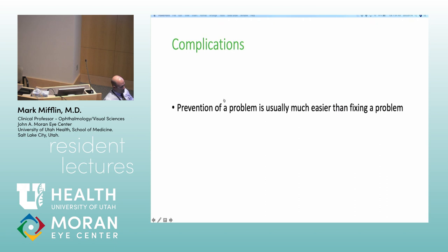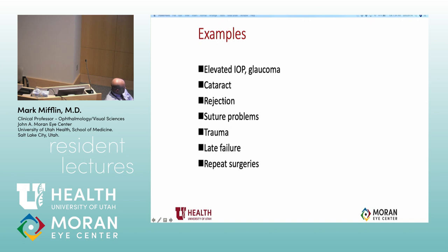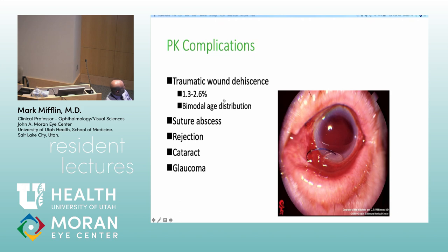Prevention of a problem is much easier than fixing it in most cases. There are all kinds of reasons that grafts can fail. The most common blinding complication of corneal transplantation is trauma, with glaucoma being probably a close second. Cataracts are fixable, and rejection depends on when you catch it.